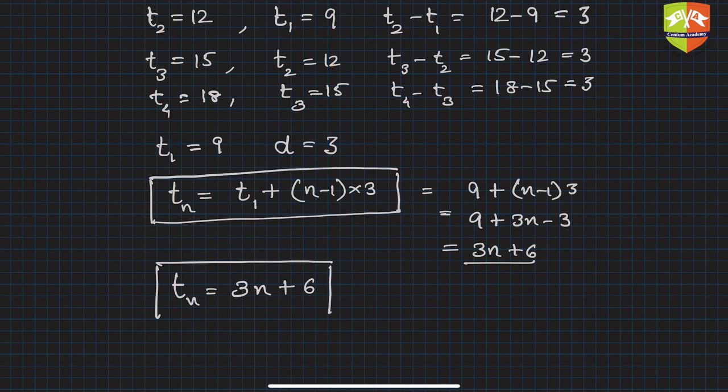So what do we learn? tn is 3 times n plus 6. So we got a formula for the general term. So hence you have to find out t16. The 16th term will be 3 into 16 plus 6, so it is nothing but 48 plus 6, which is 54.